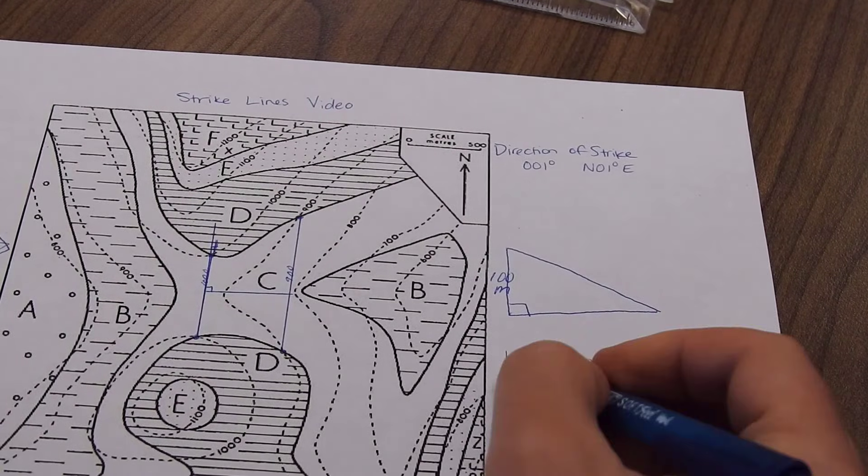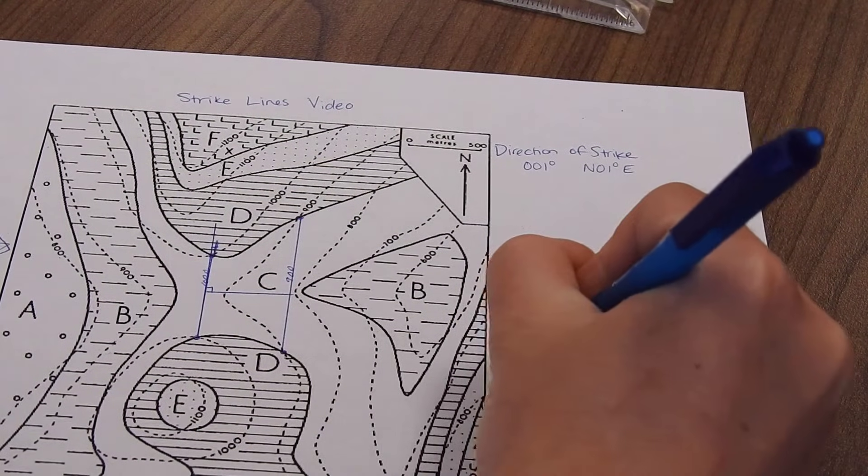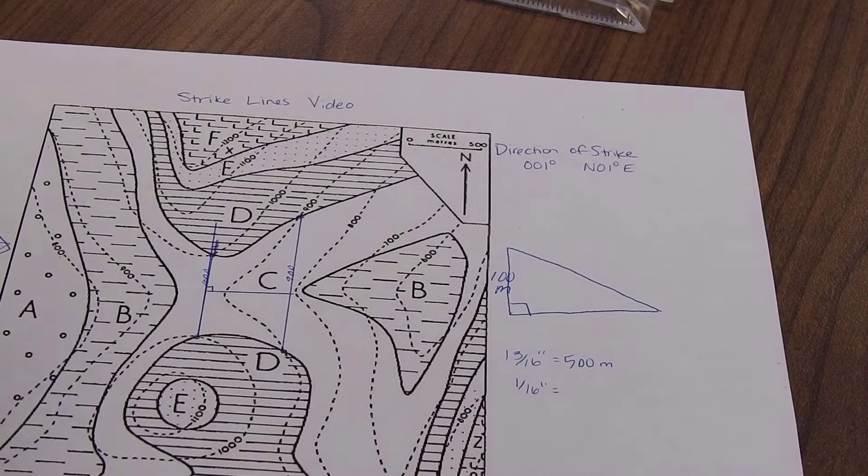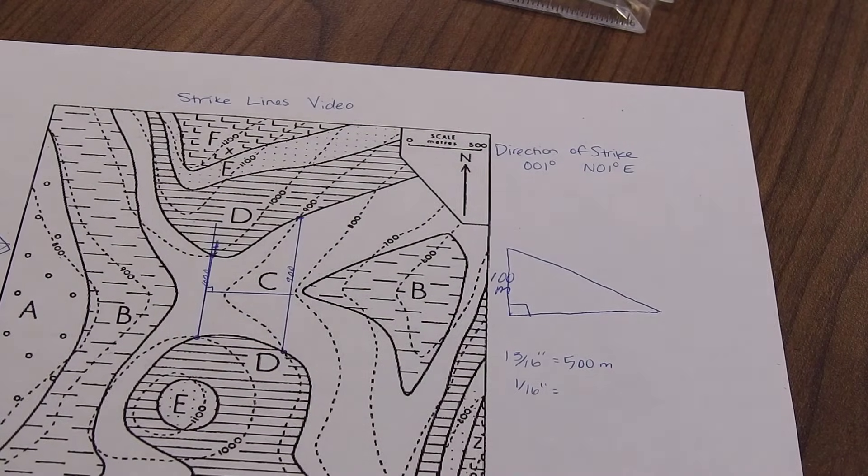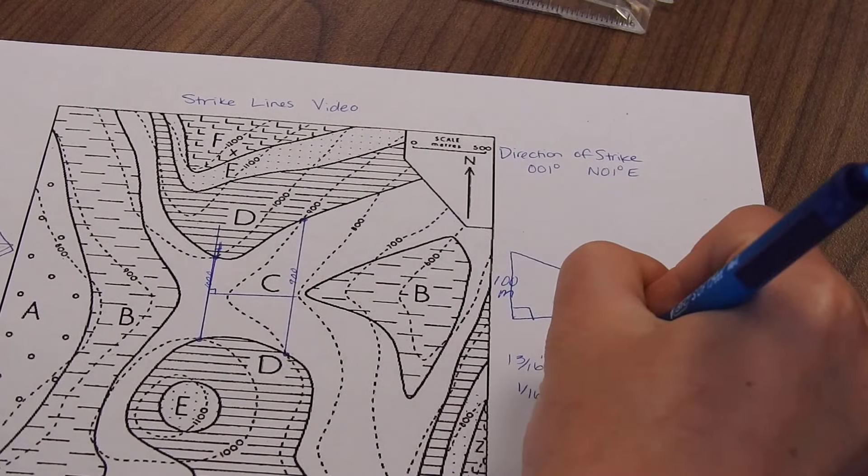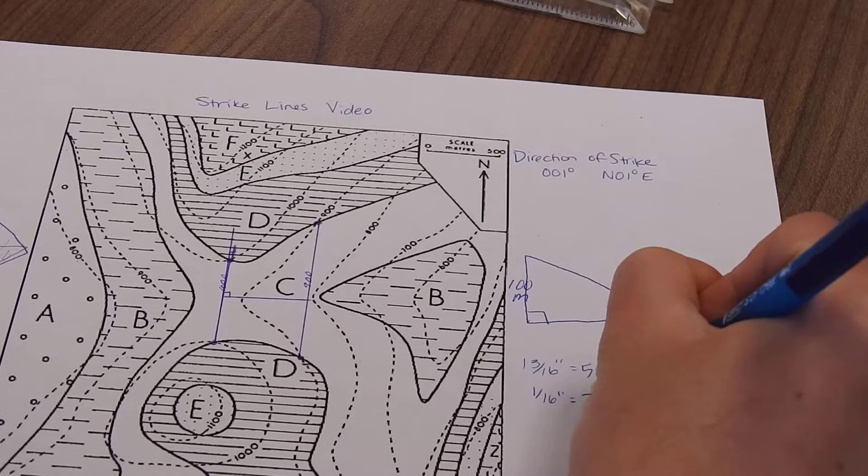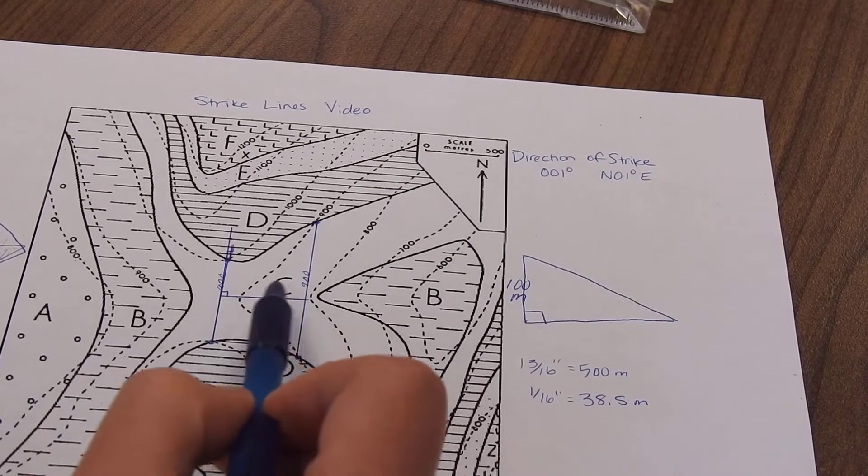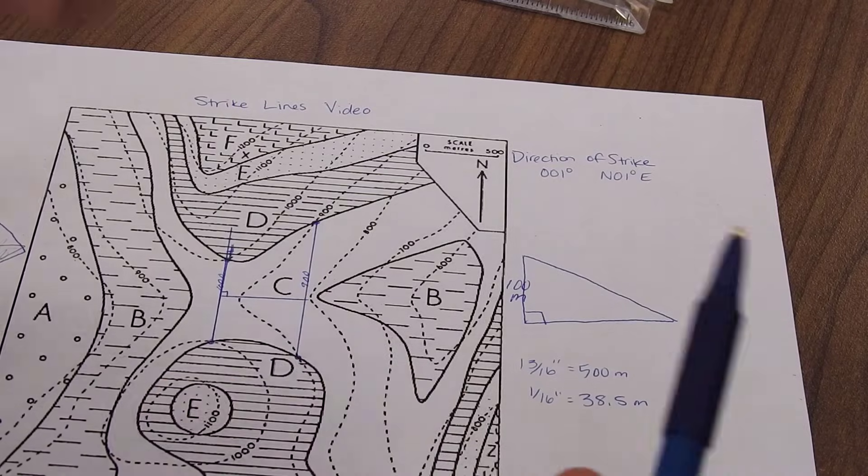I'm going to divide this by 13 so that I know what 1 sixteenth of an inch is in meters. So 500 divided by 13 is about 38, but it's a little more, 38.5 meters. And now I'm going to measure this horizontal distance between these two sides of the strike line.